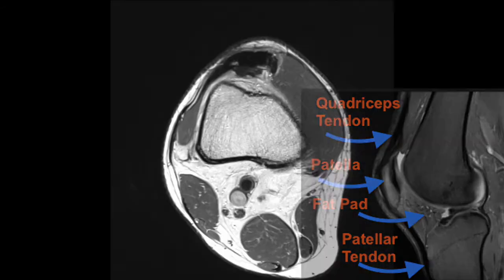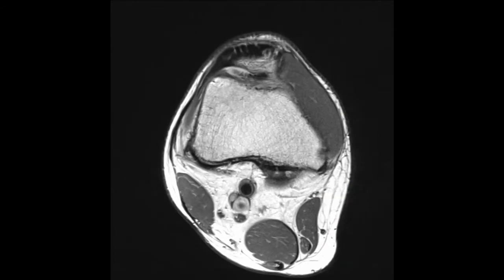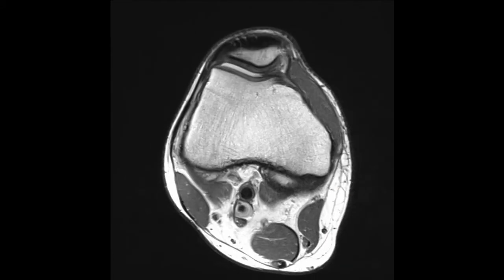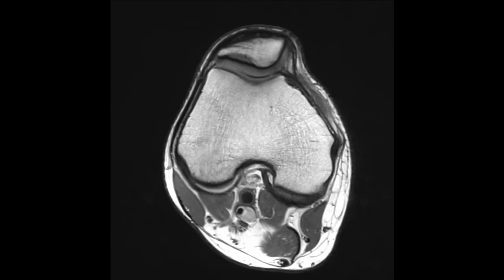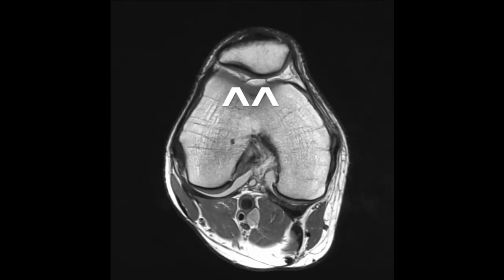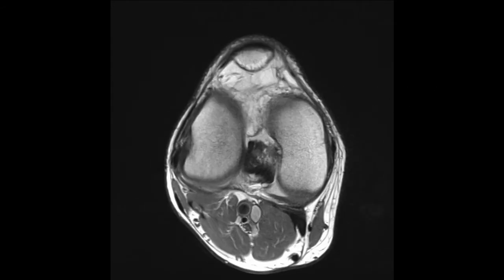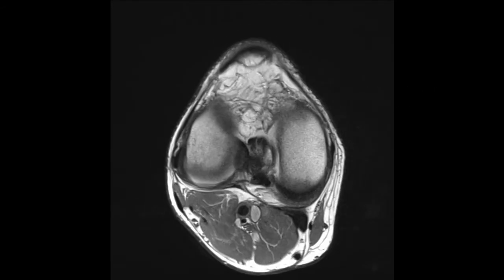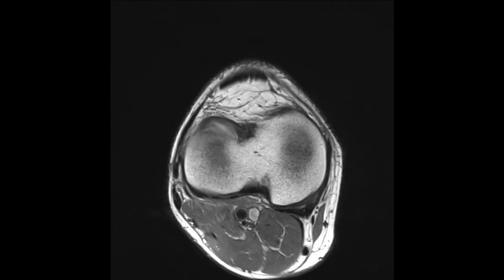The patella is well seen in the axial images, and we can see the trochlear groove of the femur and the patella comfortably placed where it should be normally.